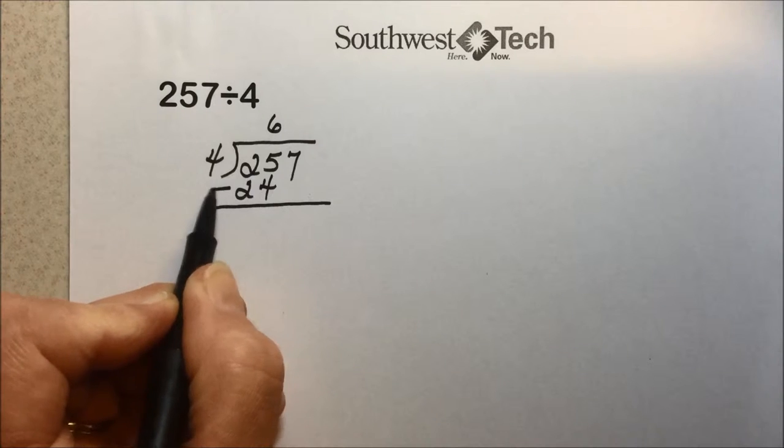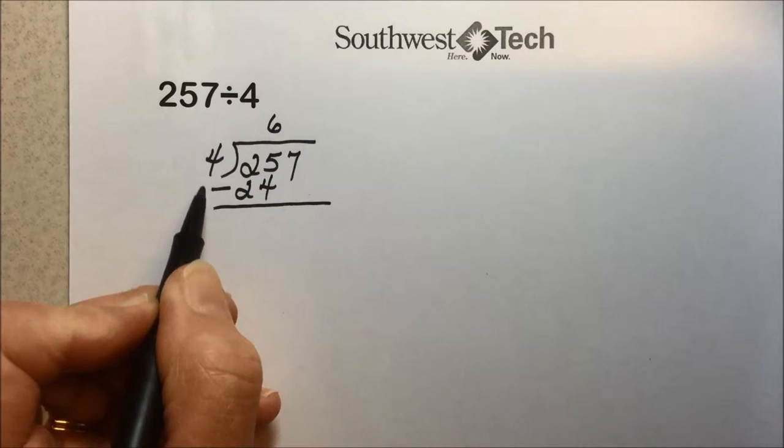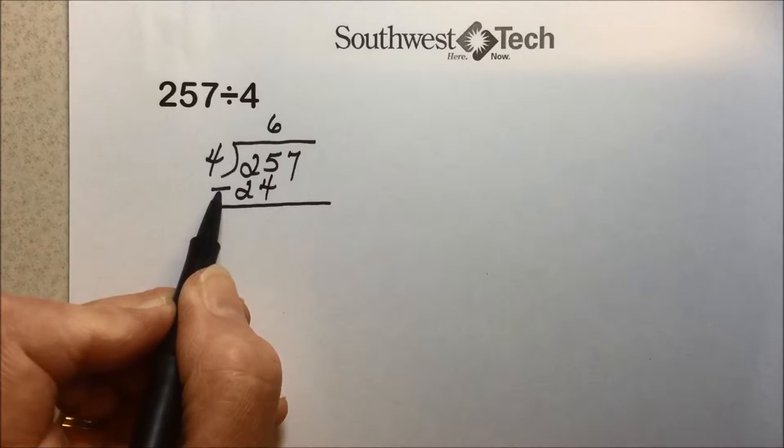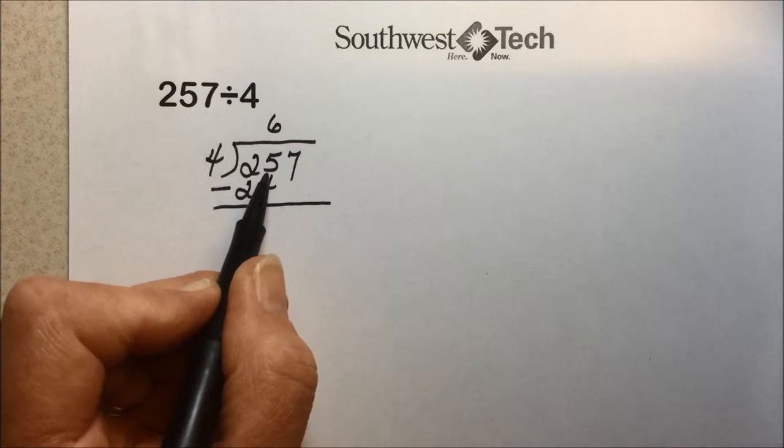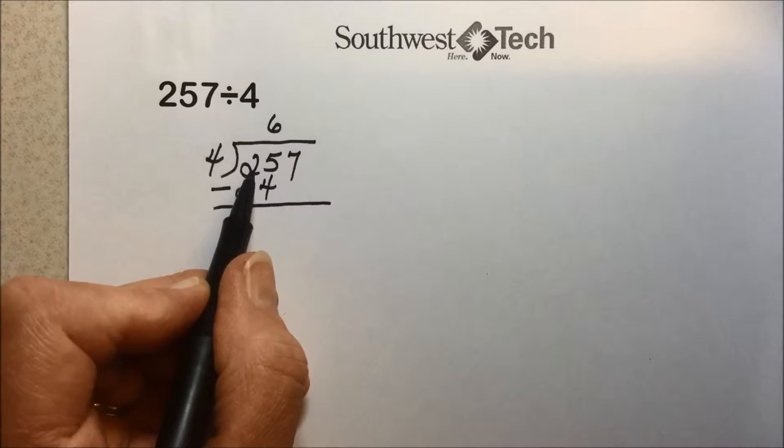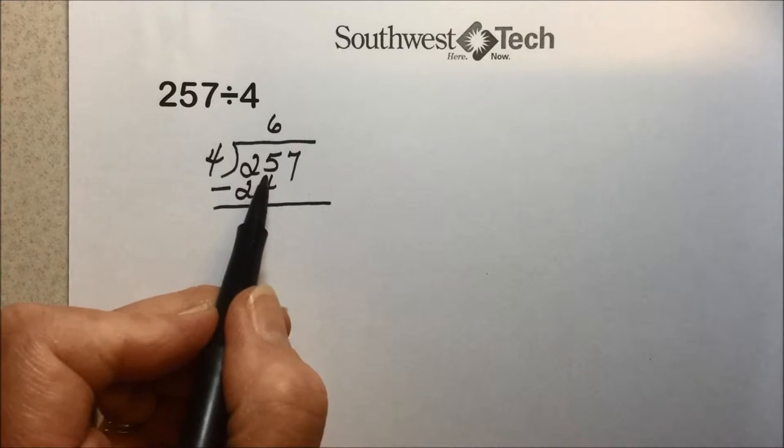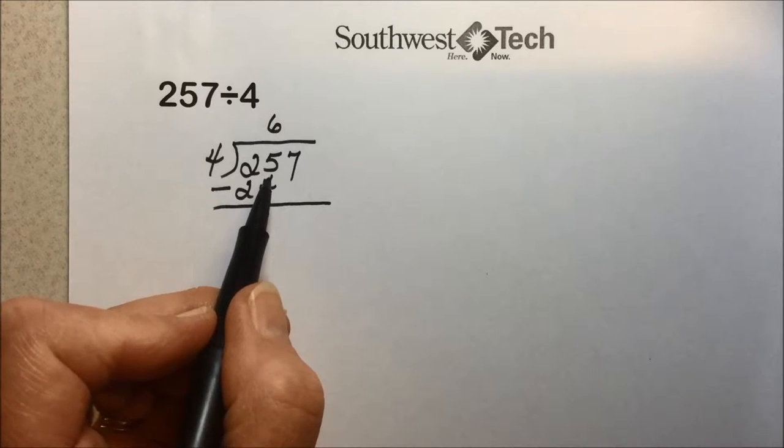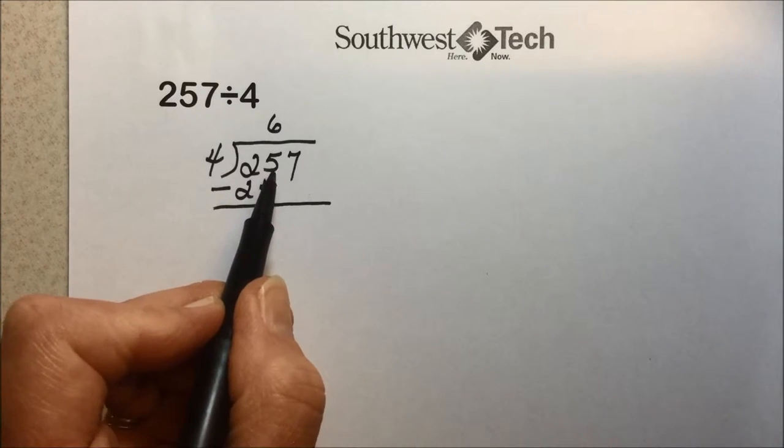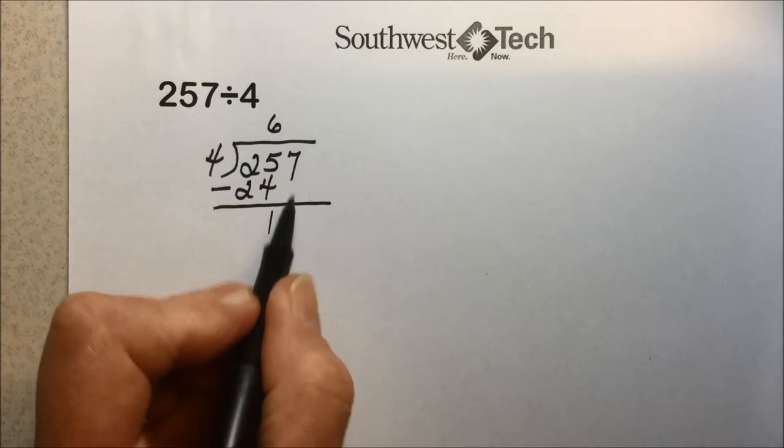We then subtract. And remember subtraction is addition of a negative number, so if we didn't want to subtract, we could add a negative number. Just keep that in mind. It may come in handy very soon with our polynomial division. But moving along, 25 minus 24 leaves 1.